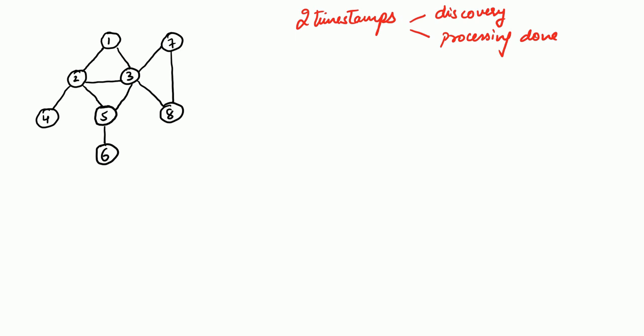Suppose we start from node 1. The starting point of the DFS procedure is node number 1, and we give it a timestamp of 0. Now standing at node 1, you have two options: either follow the edge between 1 and 2, or follow the 1-3 edge. Suppose we decide to follow this edge. You go down this path and realize there is a new undiscovered node at the other end — node number 2 is discovered. So node 2's discovery timestamp becomes 1, since you incremented the timestamp. Now at node 2 you have three options: 2-4, 2-5, and 2-3. You have to follow one of them.